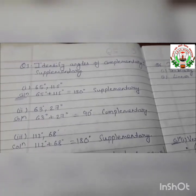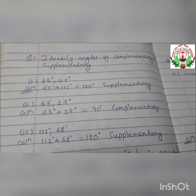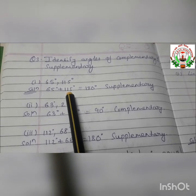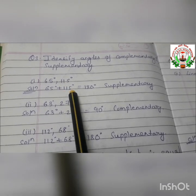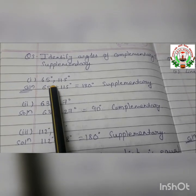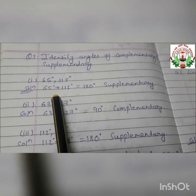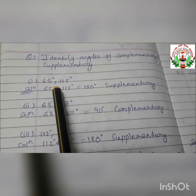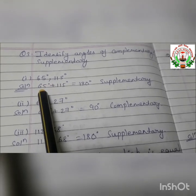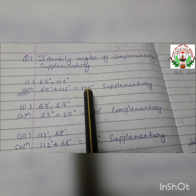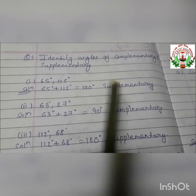Question number 3: we have to identify which pair of angles is supplementary and which is complementary. By adding both angles in each pair we can determine this. For 65 degrees and 115 degrees, adding them gives 180 degrees, so that is a supplementary angle pair.